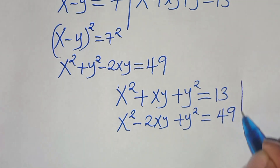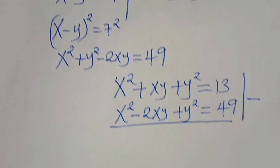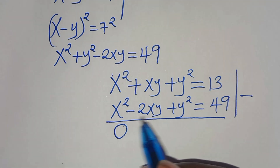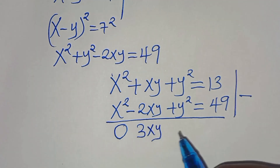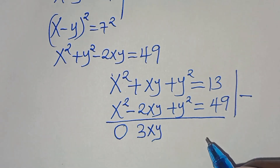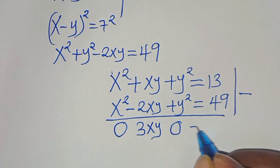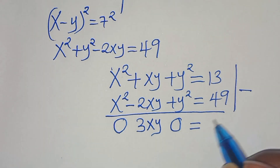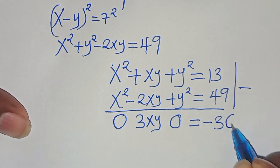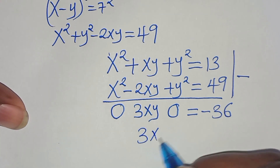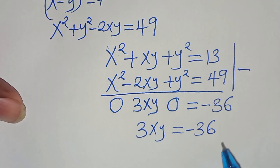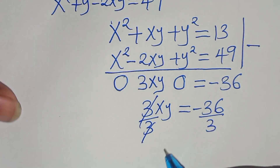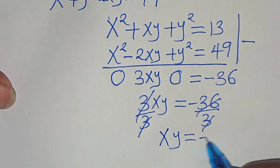We now have two equations: x squared plus xy plus y squared equals 13, and x squared minus 2xy plus y squared equals 49. Subtracting these, we get 3xy equals 13 minus 49, which equals minus 36. Dividing by 3, xy equals minus 12.